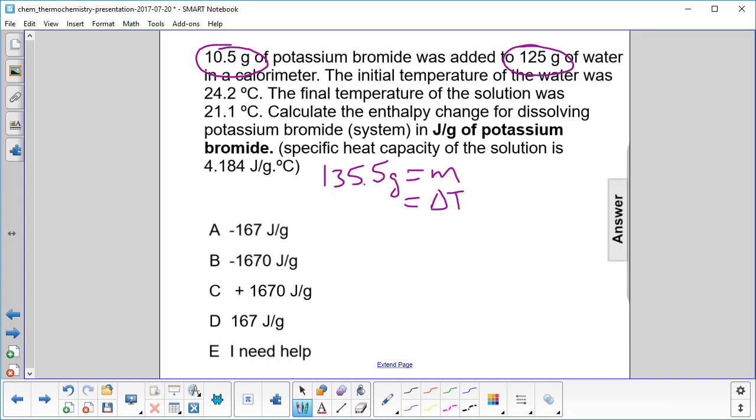So what are we going to have? It's always final minus initial. It's going to be a negative number, a negative 3.1 degrees Celsius. So you're doing the givens here first. We have C, right? That's right there.